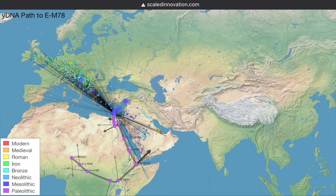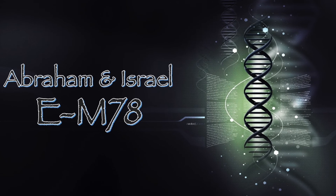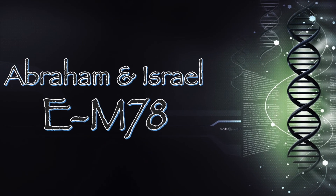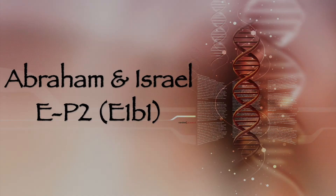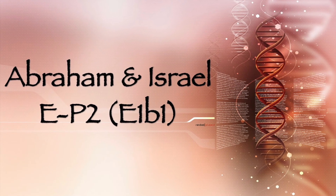If you type E-M78 into SNP Tracker, you see a distribution in the Middle East — specifically the Arabian Peninsula among the Arabs — but also in the Mediterranean and Europe among Jews, with the split occurring in the Levant, which is where the Ishmaelites and Israelites were located. With that being said, E-M78 is the second best candidate I have for Abraham and therefore the Israelites.